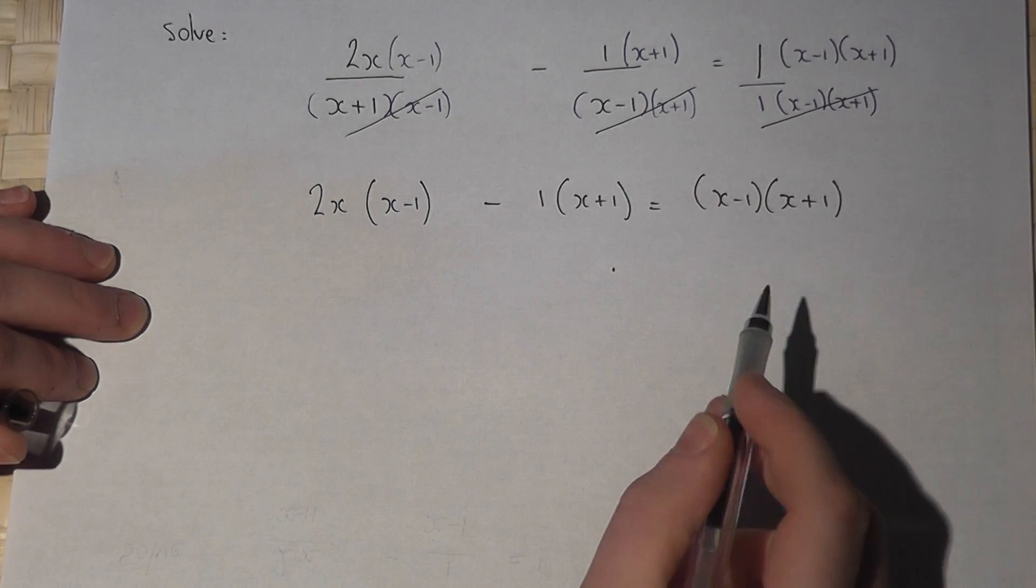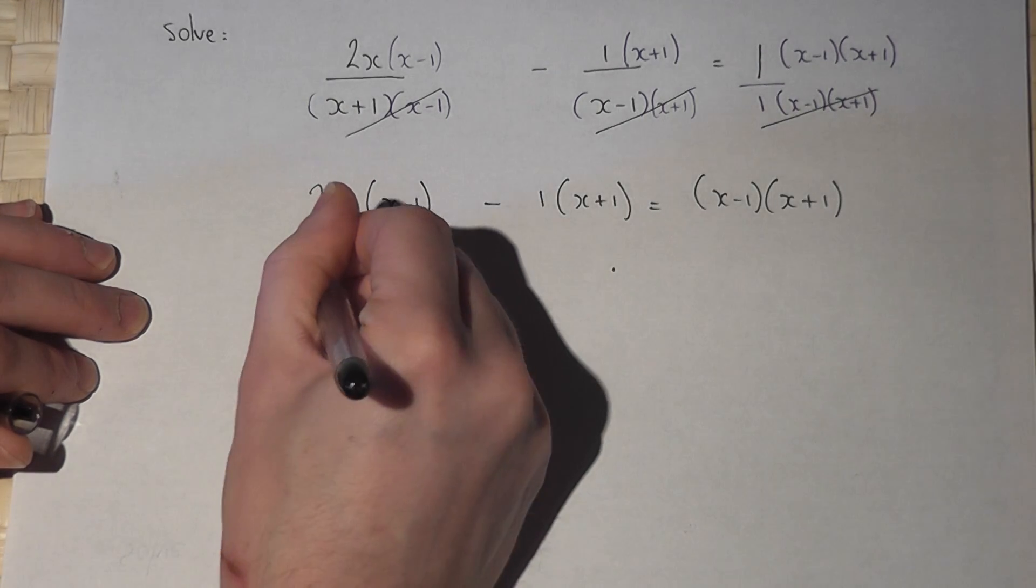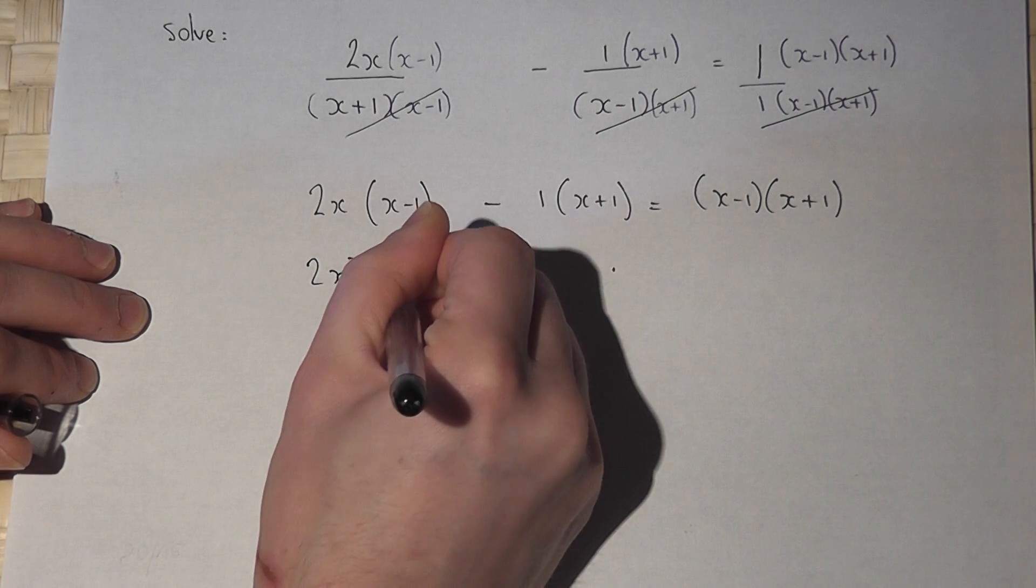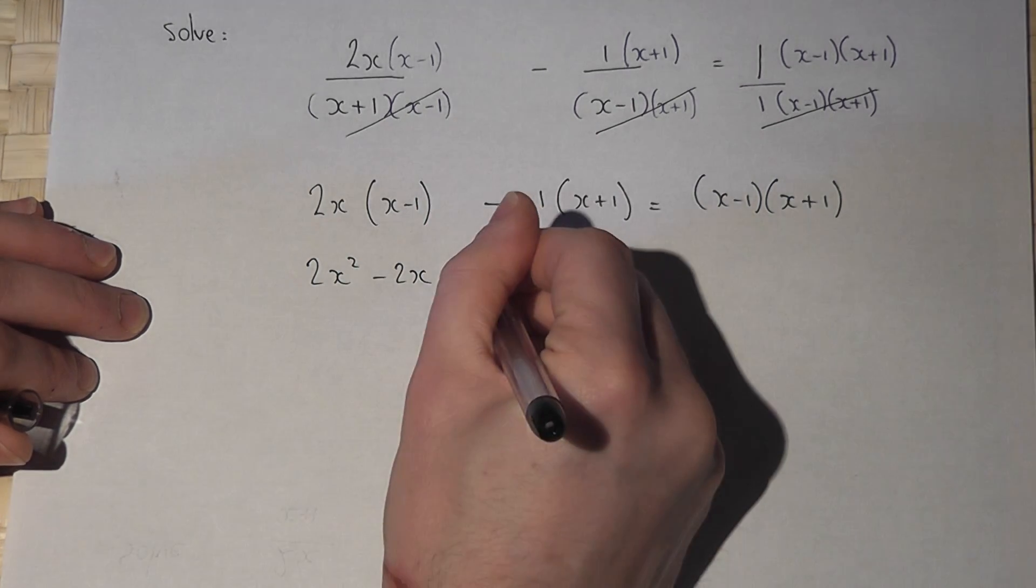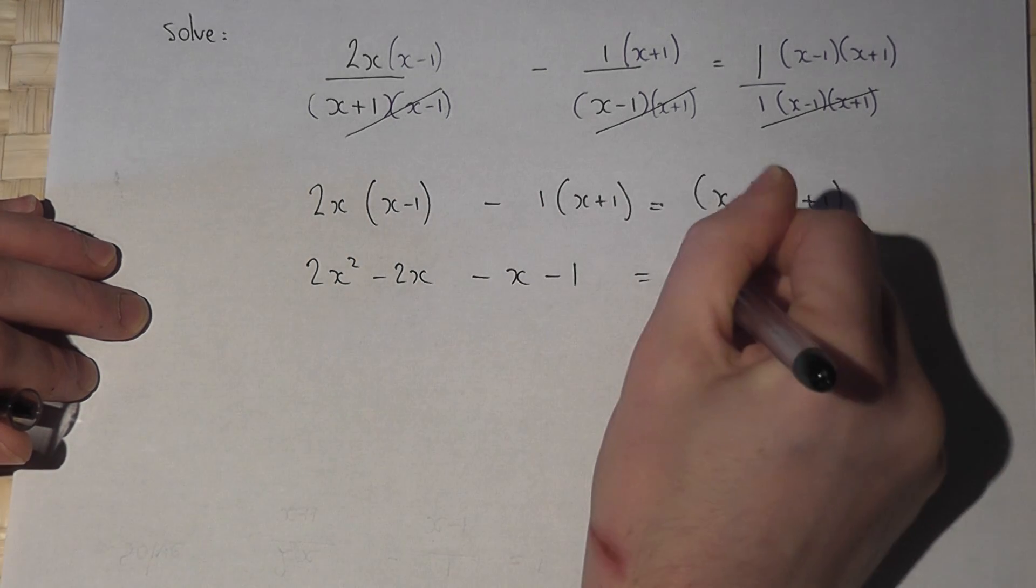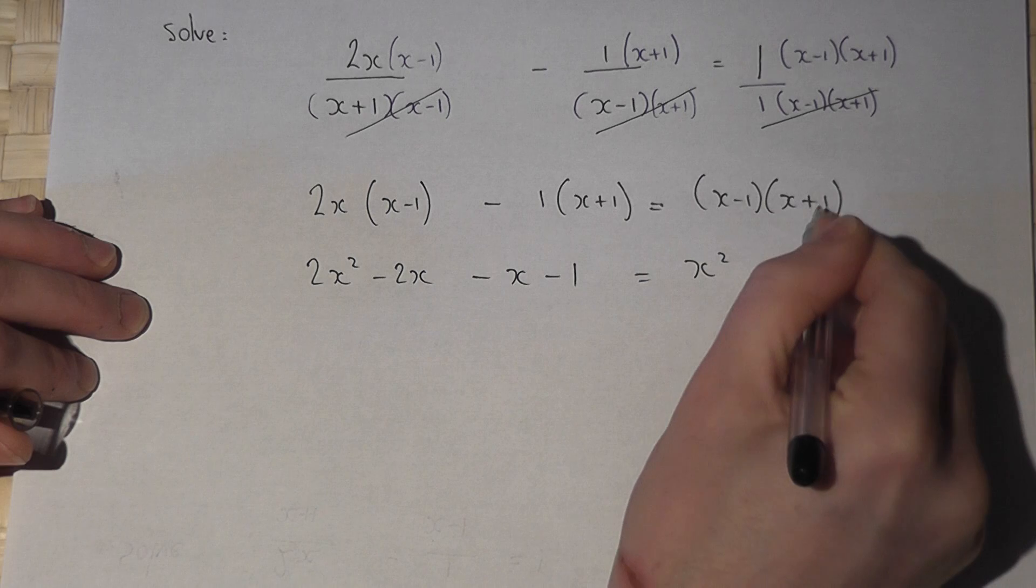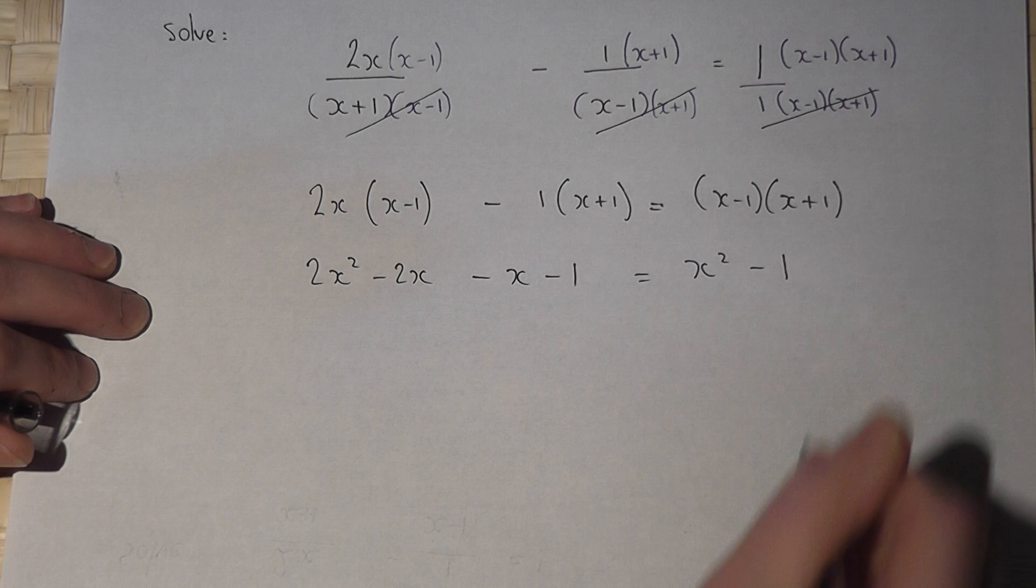I now expand each bracket separately. So 2x squared minus 2x. Now minus 1 times both these terms gives minus x minus 1, and that equals x squared minus 1x plus 1x. They cancel out. Minus 1 times 1 is minus 1.